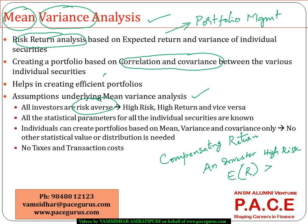A second assumption is that people can compute all these values — everyone can compute the mean of each security, the standard deviations, the variance, and even the covariance of all pairs of securities quite comfortably. They base their decisions purely on these calculations. Most investors are rational enough to do appropriate calculations and take investment decisions accordingly. Also, like most models, this model assumes there are no taxes and transaction costs, so buying and selling can happen in unlimited amounts.